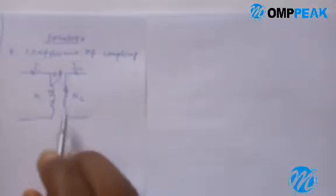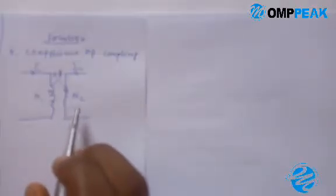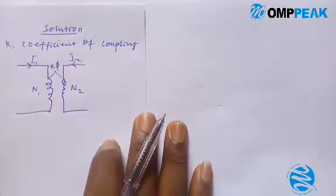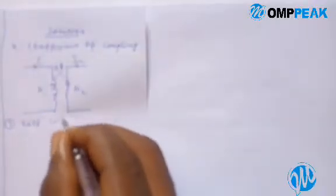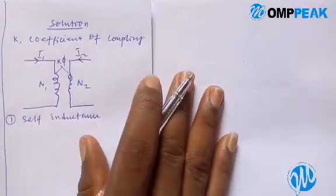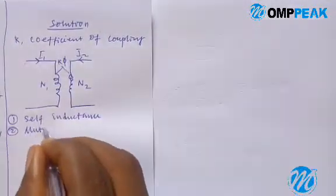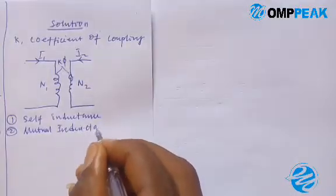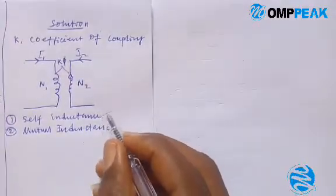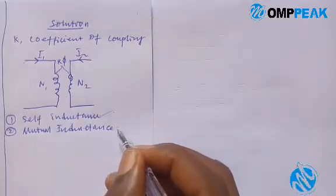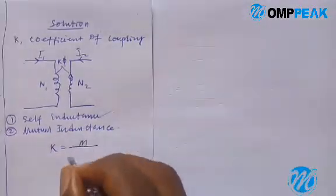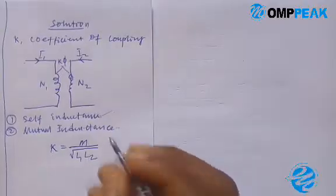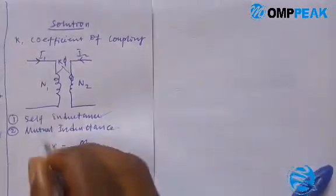To get this formula we have to make use of two types of inductances. We have one — self inductance — and we have mutual inductance. So we are going to make use of these two: first, self inductance, and second, mutual inductance, to derive this formula k equal to M over root L1 L2.